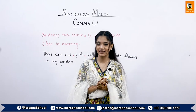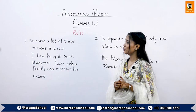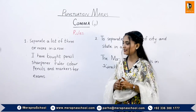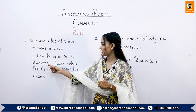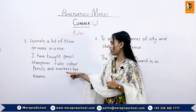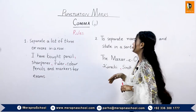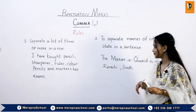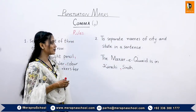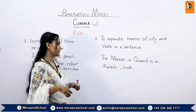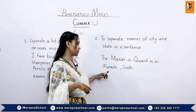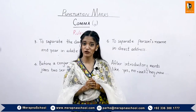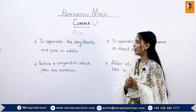The first rule is to separate a list of three or more words in a row — for example, 'I have bought pencil, sharpener, ruler, color pencils, and marker for exams.' The second rule is to separate names of city and state in a sentence — for example, 'The Mazar-e-Qaid is in Karachi, Sindh.' The name of the city and province is separated by the comma.